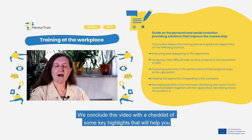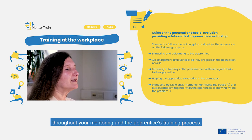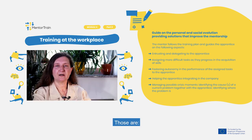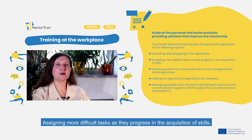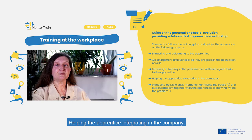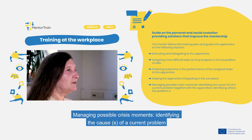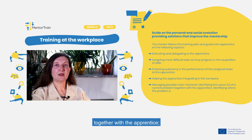We conclude this video with a checklist of some key highlights that will help you throughout your mentoring and apprentices' training process. Those are: entrusting and delegating to the apprentice, assigning more difficult tasks as they progress in the acquisition of skills, fostering autonomy in the performance of the assigned tasks, helping the apprentice integrating in the company, and managing possible crisis moments.